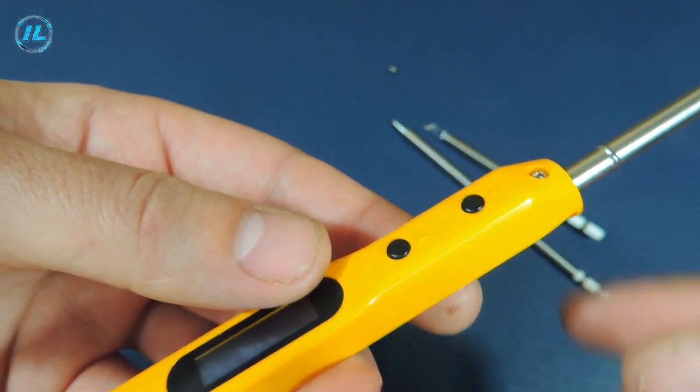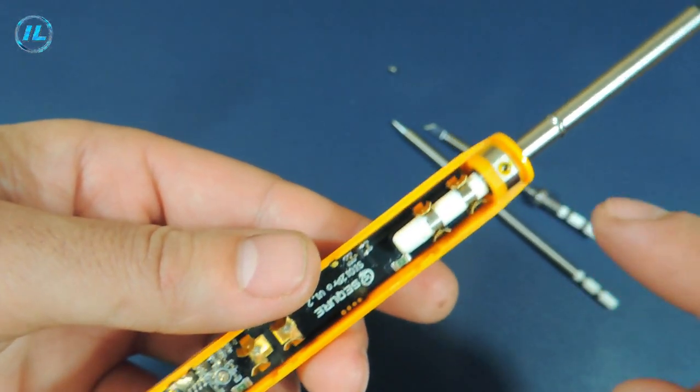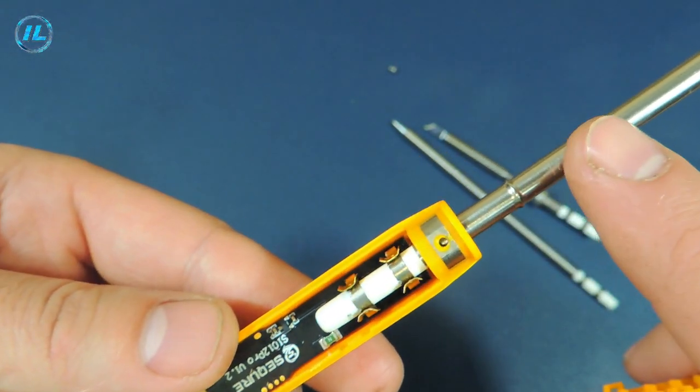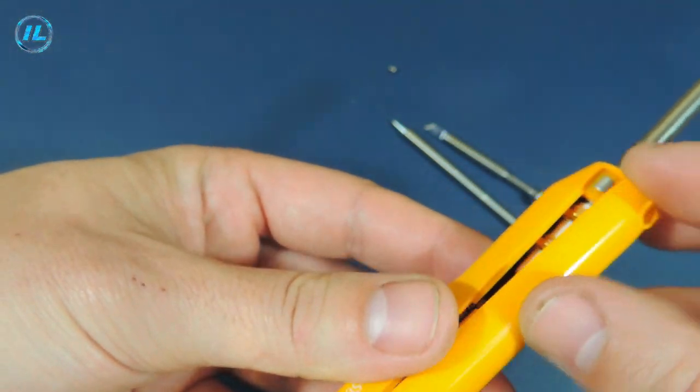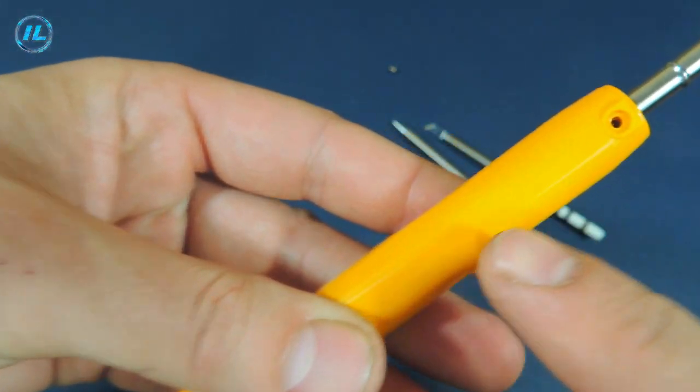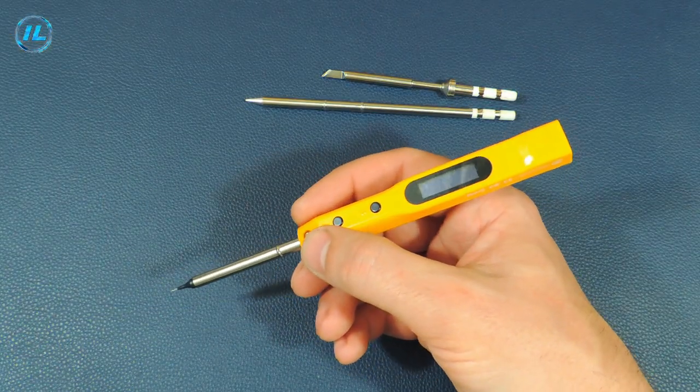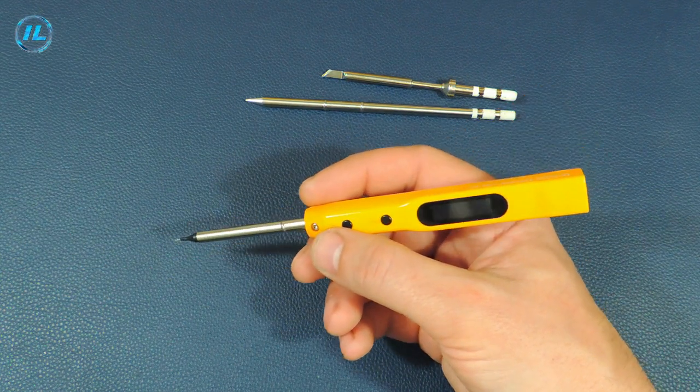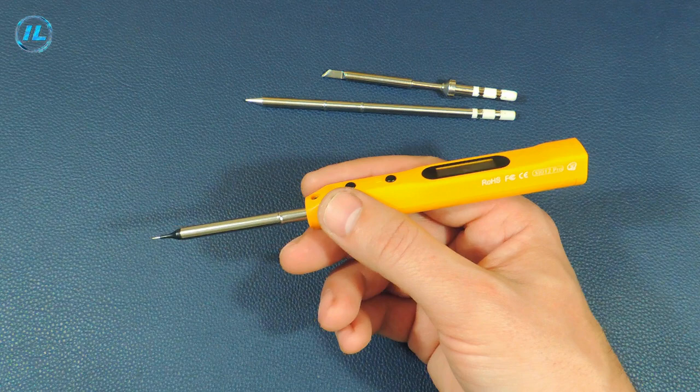By the way, the CO12 Pro soldering iron can be purchased in a transparent case. And then, even when installing such non-standard tips, it will not be necessary to disassemble it, since the contact groups will be visible through the transparent case. Well, such an opportunity to use a wide variety of tips makes the CO12 Pro soldering iron very convenient and versatile.